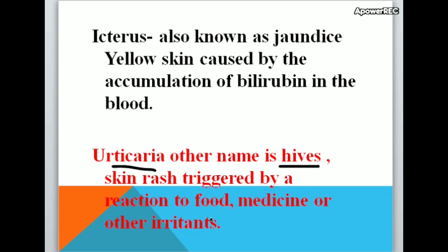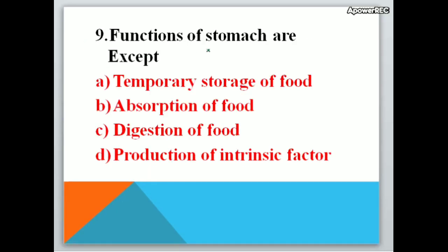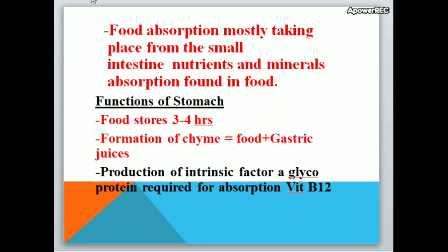Functions of stomach are — except: A. temporary storage of food, B. absorption of food, C. digestion of food, D. production of intrinsic factor. Correct answer is absorption of food — absorption of food is not a function of the stomach. Food absorption mostly takes place in the small intestine, where nutrients and minerals found in food are absorbed.